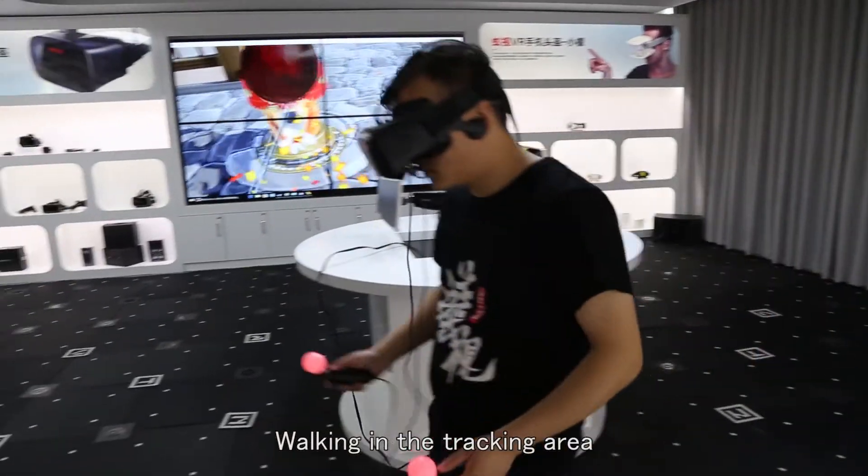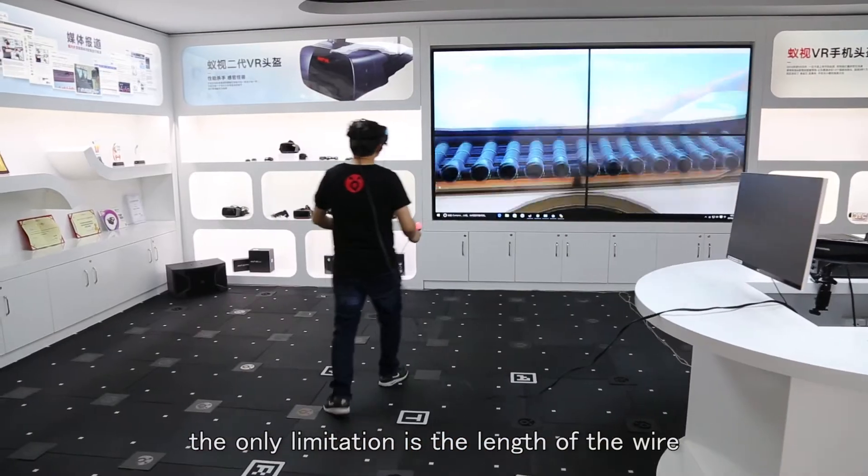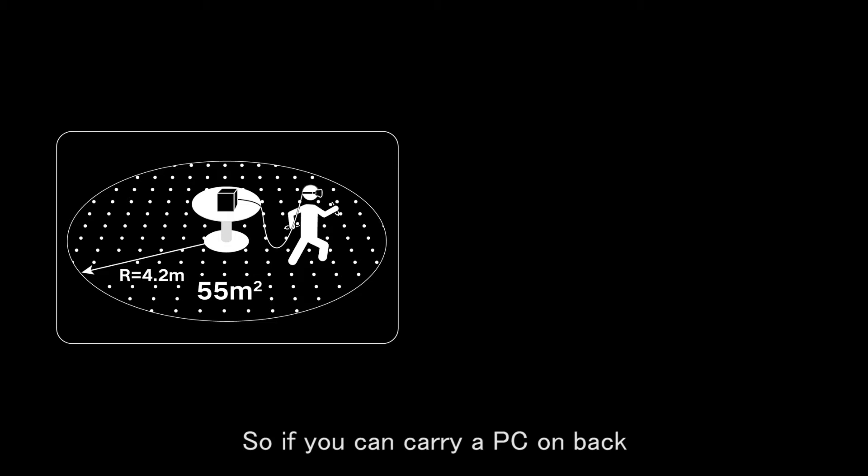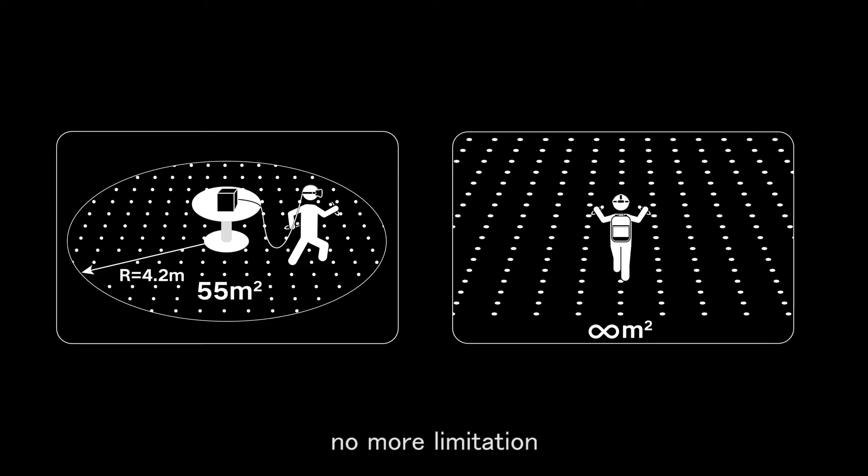Walking in the tracking area, the only limitation is the length of the wire. So if you can carry a PC on your back, no more limitation.